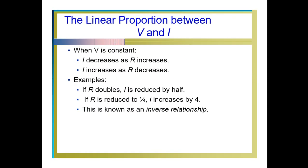When V is constant, I decreases as R is increased, and I increases as R decreases. For example, if R doubles, I is reduced by half. If R is reduced to one-fourth, I increases by four times. This is known as an inverse relationship.